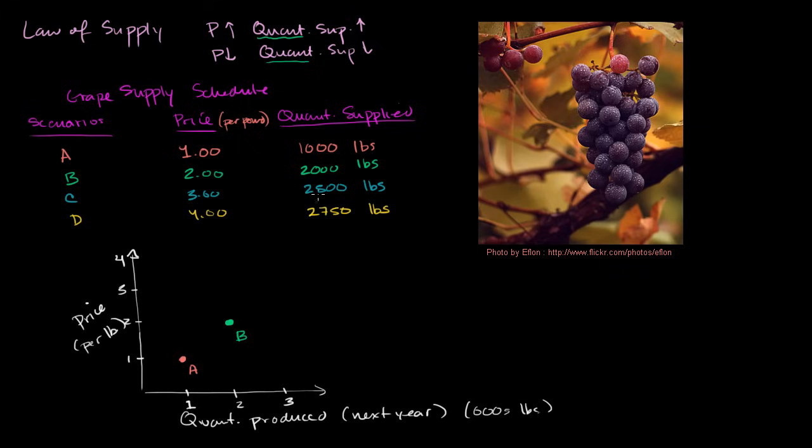At $3, we'd supply 2,500 pounds. Notice I get my axes confused. This is price. This is what we're kind of, when we talk about it this way, that we're kind of viewing the thing that's changing. So $1, 1,000 pounds. $2, 2,000 pounds. $3, 2,500 pounds. But I want to do it in that blue color, so we don't get confused. So $3, 2,500 pounds, and that's about right. So this is scenario C.